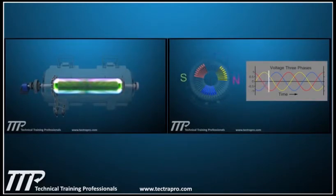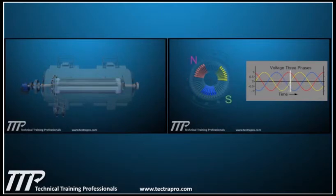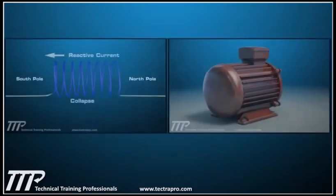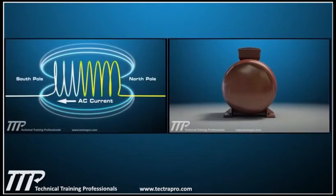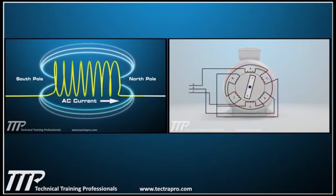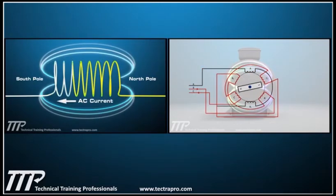The Power Production chapter provides a unique look at the production of power within a generator. In the course's last chapter, we take a look at reactive power and its effect and importance on generator operation.